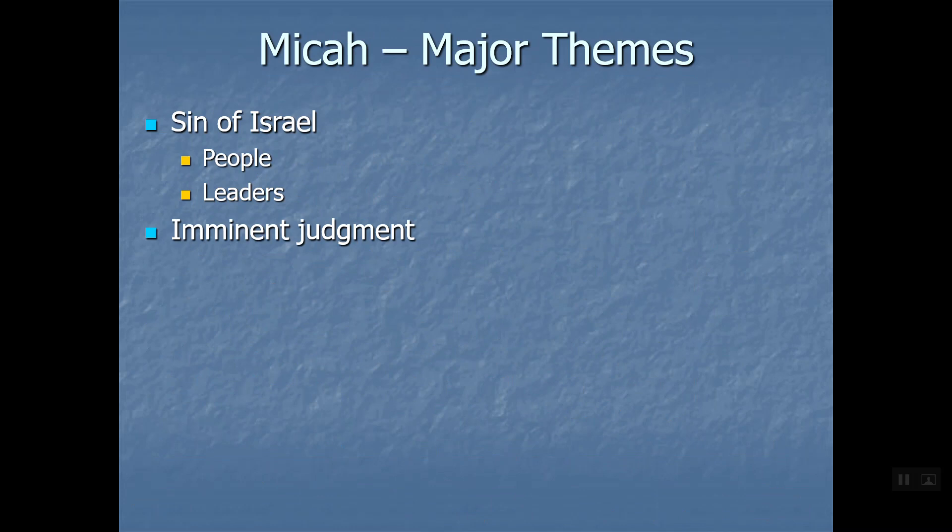The big issue in Ezekiel was where God's glory is - where God is. God was in Jerusalem, and people in both Jeremiah and Ezekiel were saying, 'God's here, we're going to be spared.' But Ezekiel pictured God leaving Jerusalem and abandoning it. Ezekiel saw God's glory by the river Chebar in Babylon - God was going to exile with His people. Then in his later vision, Ezekiel saw God coming back to Jerusalem and being there with His people in a new temple.